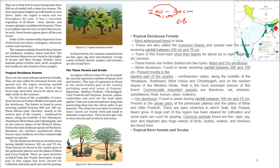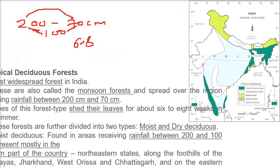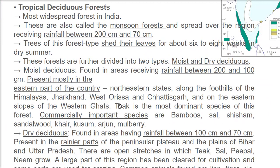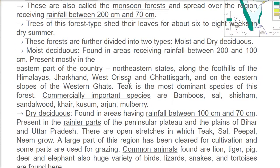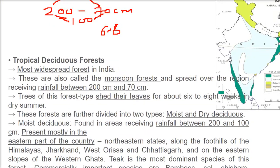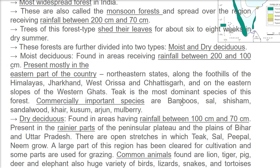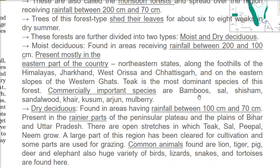Teak is the most dominant species of moist deciduous forest. Commercially important trees include bamboo, sal, shisham, sandalwood, khair, kusum, arjun, and mulberry. For dry deciduous forests — rainfall between 100 and 70 centimeters — found in the rainier parts of the peninsula plateau, plains of Bihar and Uttar Pradesh, where teak, sal, peepal, and neem grow.